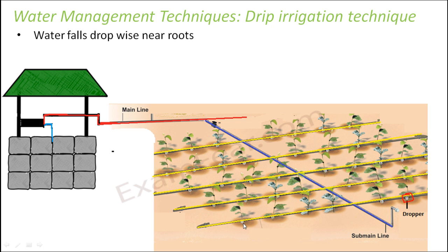In small amounts you are continuously providing water to the plants, so there is no wastage in transporting water from one place to another. This is a very judicial way of irrigating the field — it is called drip irrigation. In this way we are doing irrigation and at the same time saving water. These kinds of techniques are termed water management techniques.